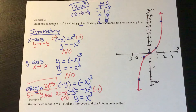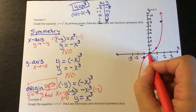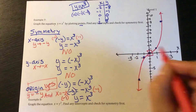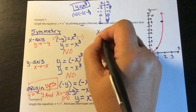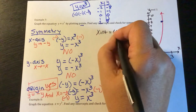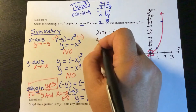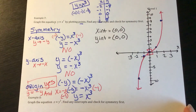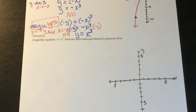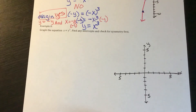The graph y equals x to the third power only has symmetry about the origin. It also asks us to find the intercepts. The only place this graph crosses either axis is at the origin. So the x-intercept is at (0, 0) and the y-intercept is at (0, 0). This one asks us to graph the equation x equals y squared and to find any intercepts and check for symmetry first.